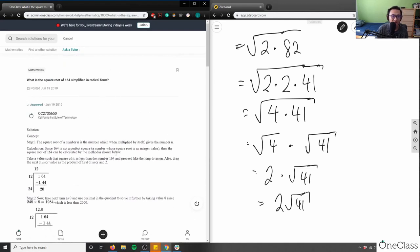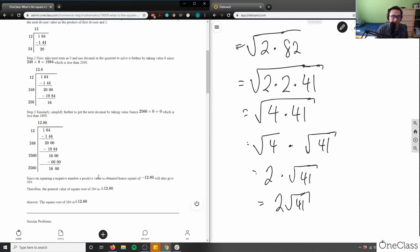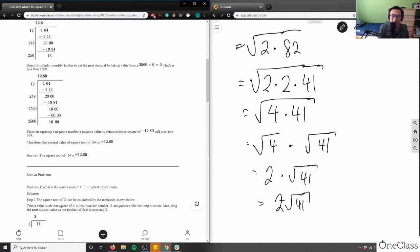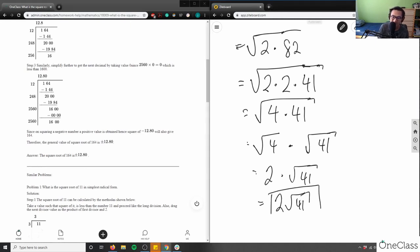So again, when we talk about simplified in radical form, this is not a simplified in radical form. Radical form means that simplified radical form means that I have exact values here. If you input 2 root 41, this would also equal root 164.